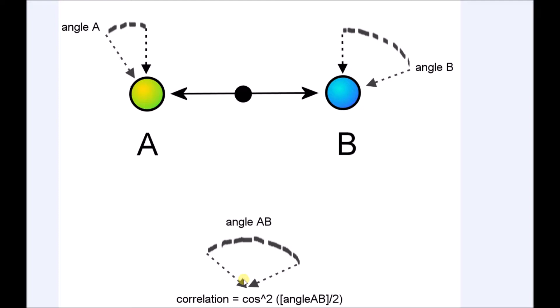When angle A and angle B are the same, the final angle is zero and the correlation is expressed by the cosine squared of half the angle.